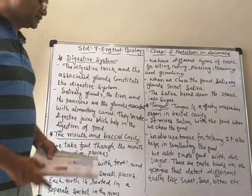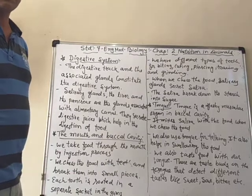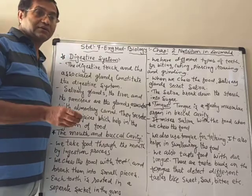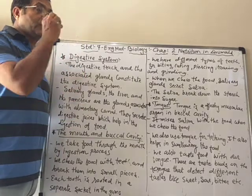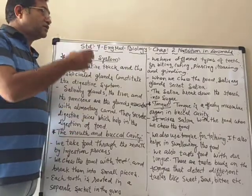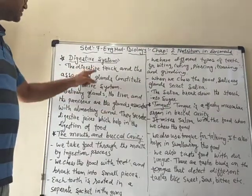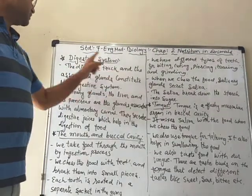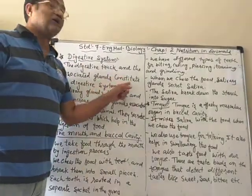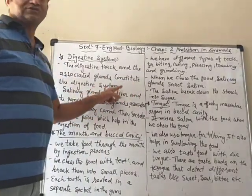Now, along with that we have to learn about the digestive system. The digestive system means the digestive tract — from the buccal cavity to the anus there is a long connected tract known as the alimentary canal — and the associated glands together constitute the digestive system.